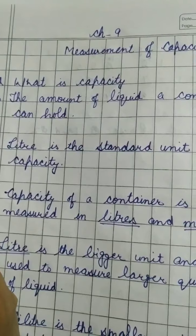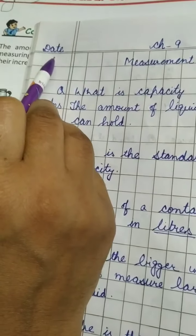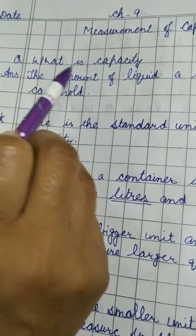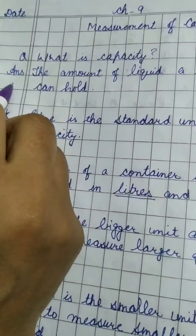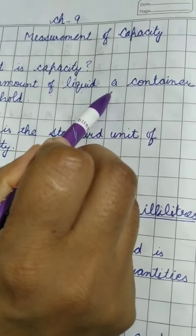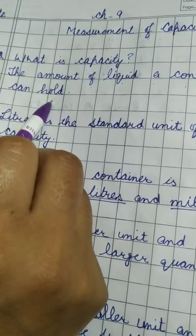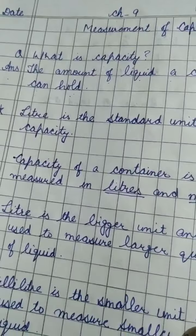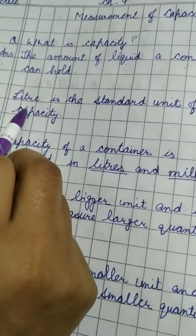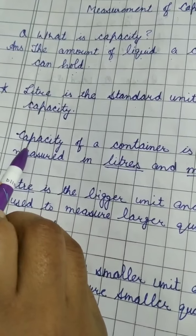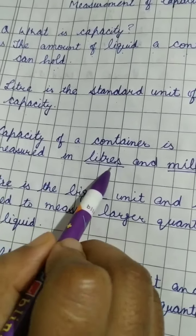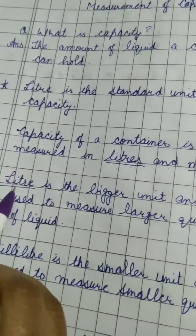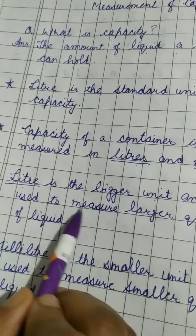Now write in your notebook: date, Chapter 9 — Measurement of Capacity. Question: What is capacity? Answer: The amount of liquid a container can hold. Important points: Liter is the standard unit of capacity. The capacity of a container is measured in liters and milliliters. Liter is the bigger unit and is used to measure larger quantities of liquid.